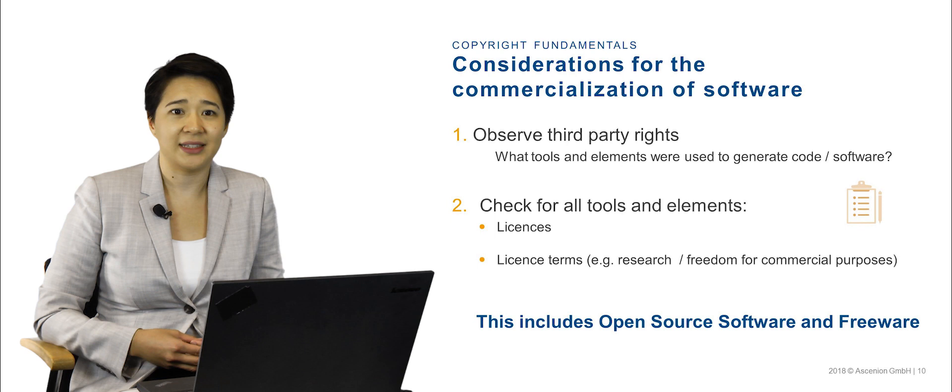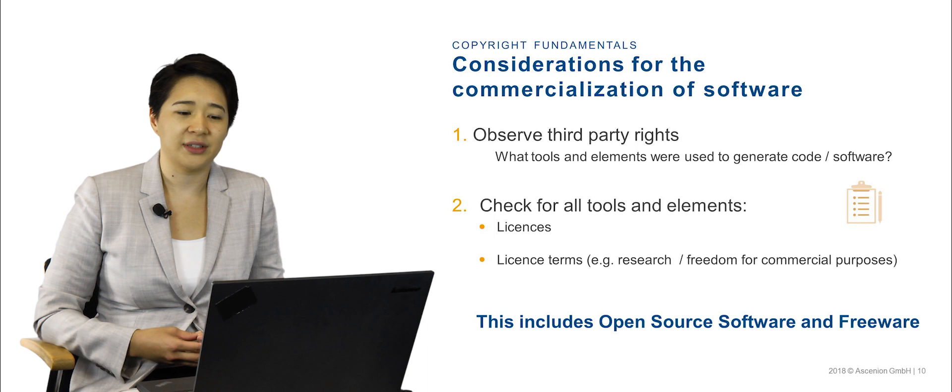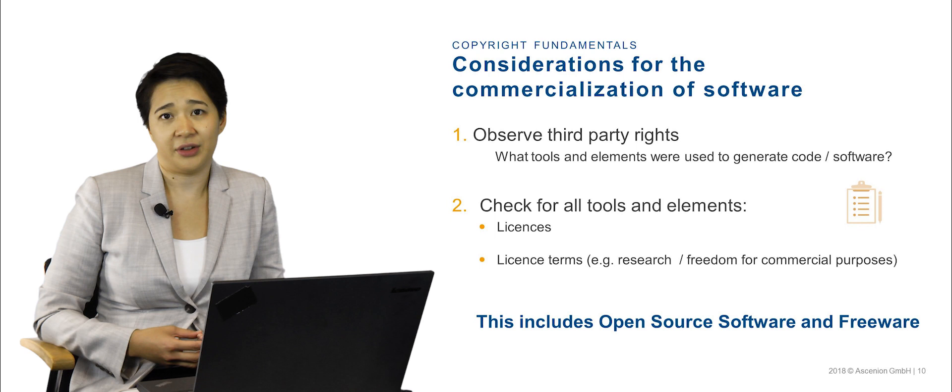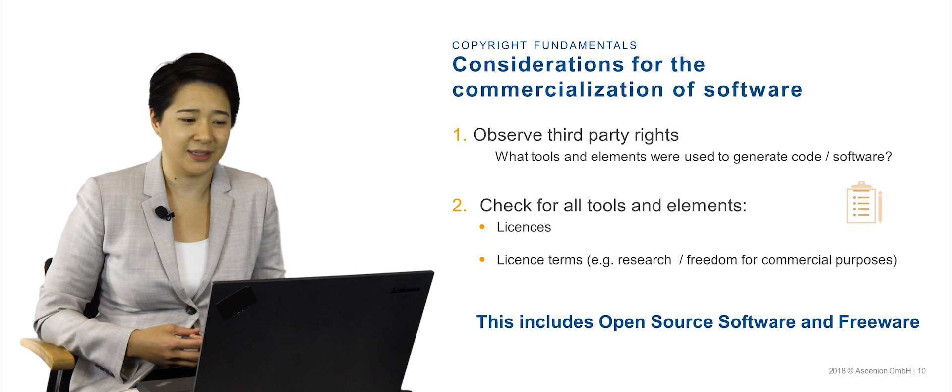This includes all open source software and freeware. Many software licenses include certain restrictions or obligations that need to be taken into account when determining whether or how the software can be commercialized. Your technology transfer office can help you review your software for any potential third-party obligations and also provide advice on known software licenses and obligations before you start developing your software program if you think there could be commercial applications.